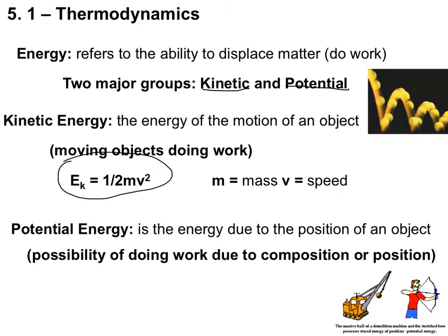This equation will sometimes come in handy depending on what you're given, and there are plenty of practice problems in the book. Potential energy is the component of energy due to an object's position — you have the possibility of actually performing work based on the position of an object or its chemical composition.